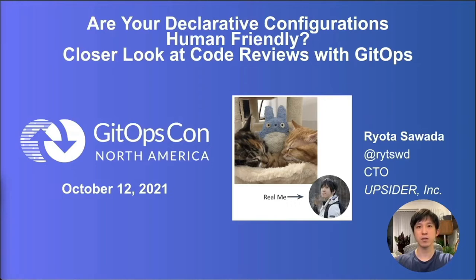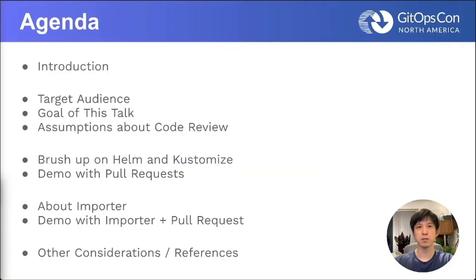Let's get right into the agenda. I'll start with a brief introduction of myself and the company Upsider, then we'll touch on the target audience and the goal of this talk. After a quick brush-up on Helm and Kustomize, we'll look at some example pull requests. We'll then look at a brand new project I've been working on, Importer. Finally, I'll touch on other tools and considerations for a great code review experience with GitOps.